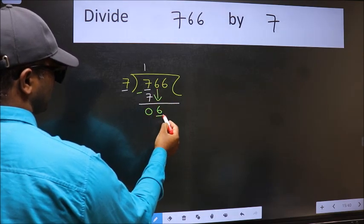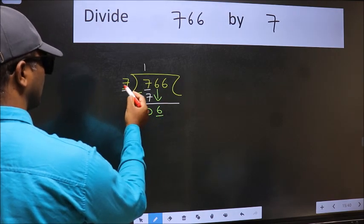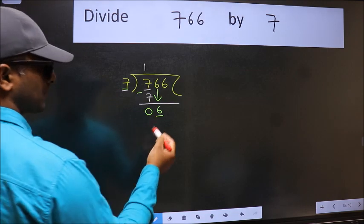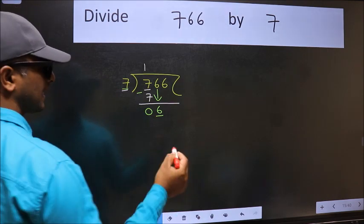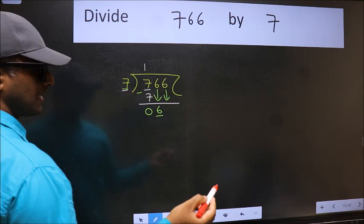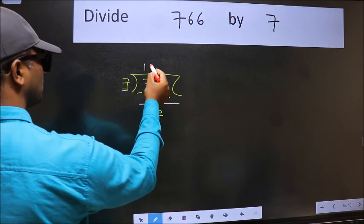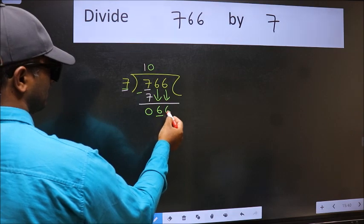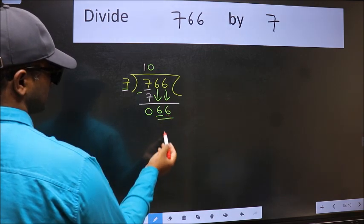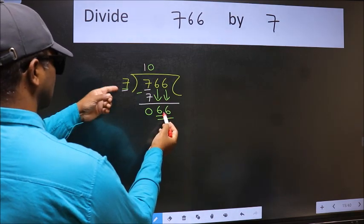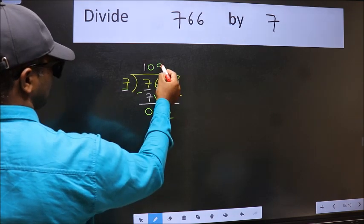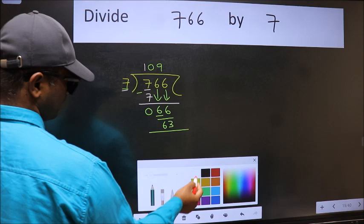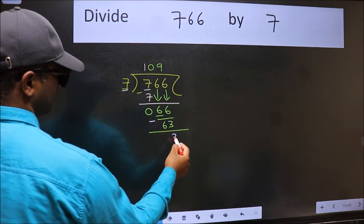Now here we have 6 and here 7. 6 is smaller than 7, so we should bring down the second number. The rule is we should put 0 here, then we can bring this number down. Now we have 66. A number close to 66 in the 7 table is 7 times 9 equals 63. Now we subtract and get 3.